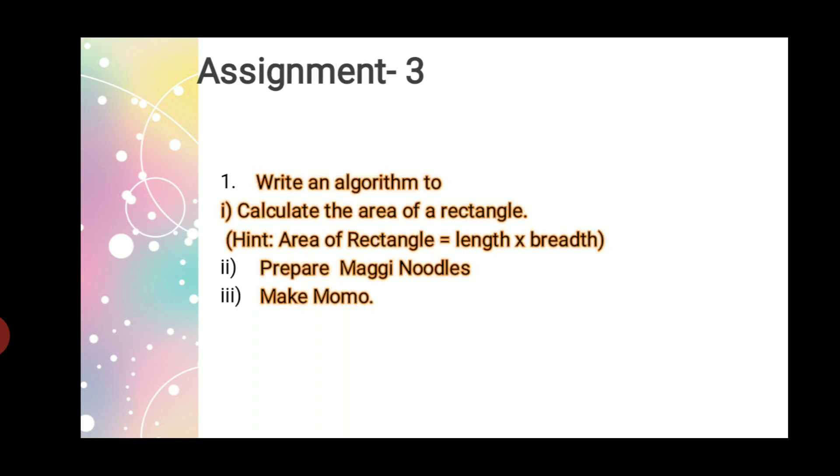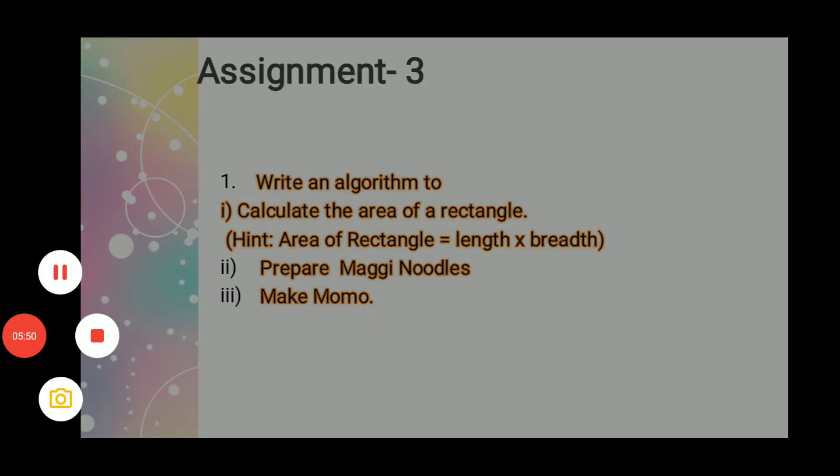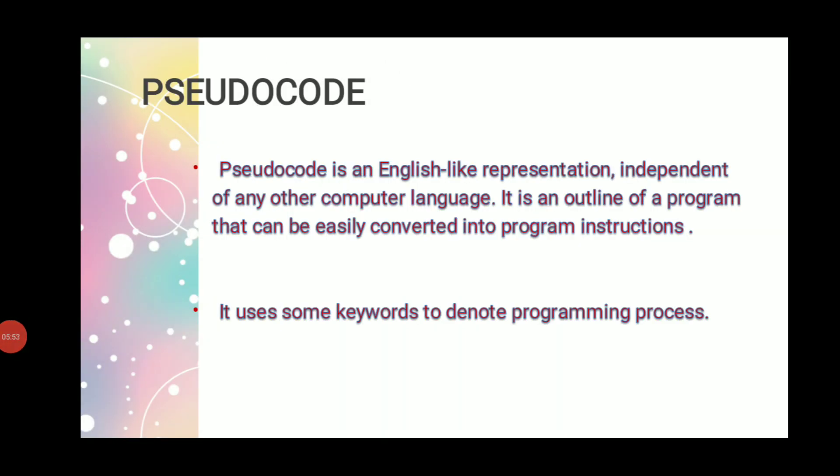My dear students, the assignment for today's class is to write an algorithm to calculate the area of a rectangle. You have to know first the formula: area of rectangle is length times breadth. Two more questions are to prepare Maggi noodles and to prepare momo. How are you going to do it? For Maggi noodles, please see the packet—the directions for use are written there. And momo, you all know how to cook it. The next part we will discuss in the next class. Thank you, class.